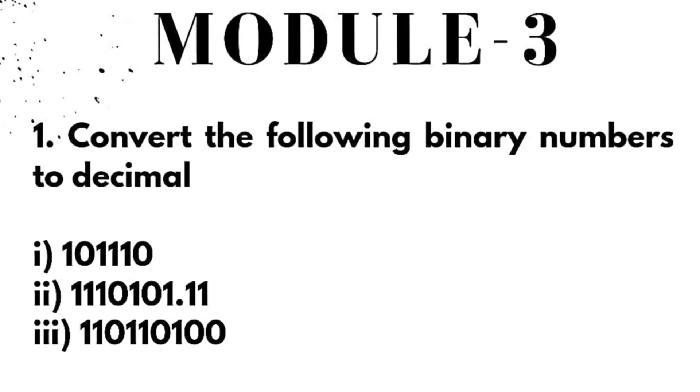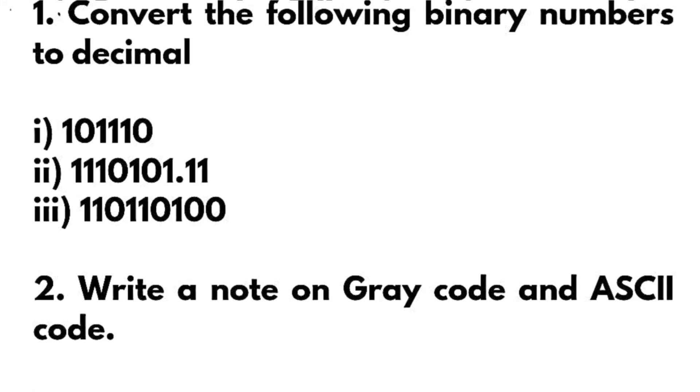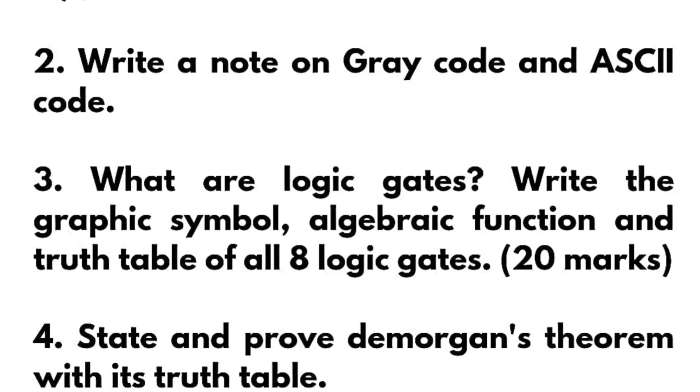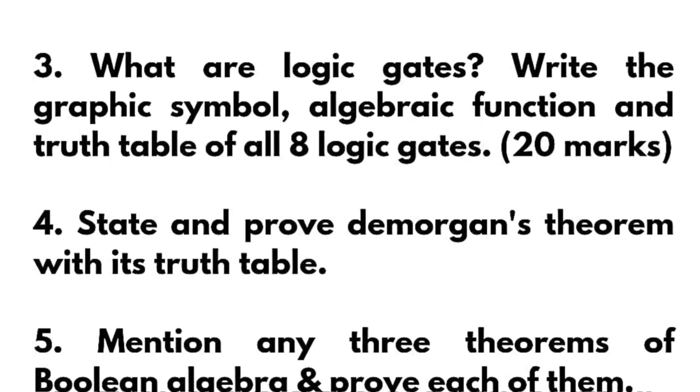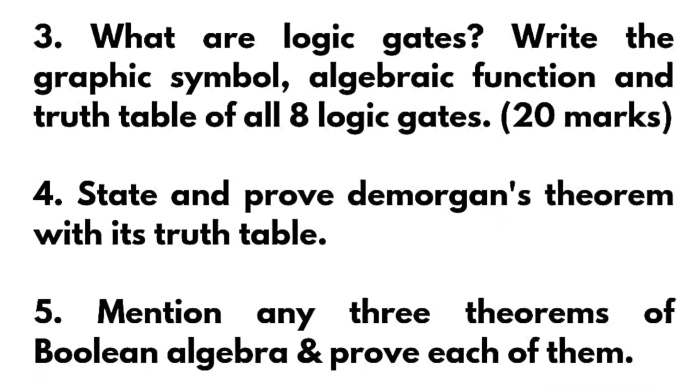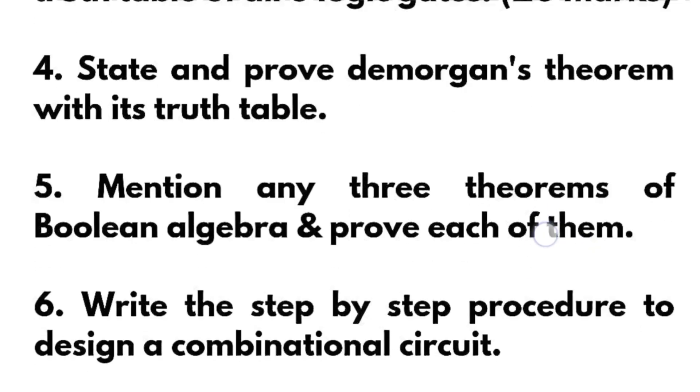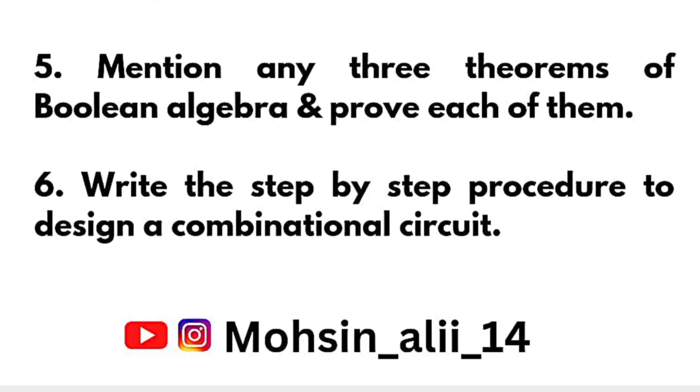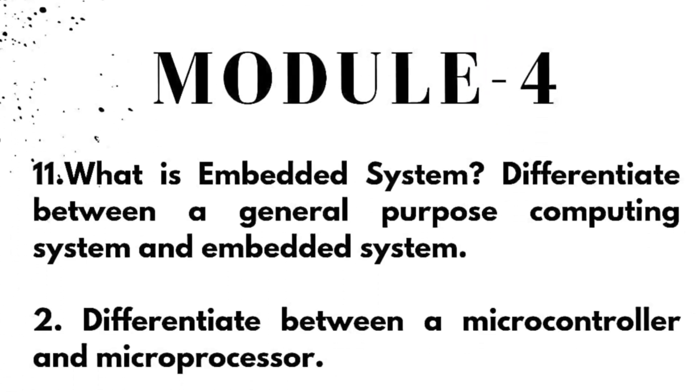Next we have module third where you have to cover questions like: convert the following binary numbers to decimal. I have taken out here some examples - you should go through all the different varieties of problems from previous year question papers. It may be hexadecimal to decimal, binary to hexadecimal, like that. Write a note on Gray code and ASCII code. What are logic gates? Write the graphic symbol, algebraic function and truth table of all eight logic gates - this may be 20 marks question. State and prove De Morgan's theorem with its truth table. Mention any three theorems of Boolean algebra and prove each of them. Write the step-by-step procedure to design a combinational circuit. This is all about module third.